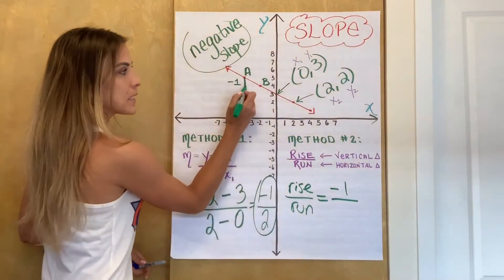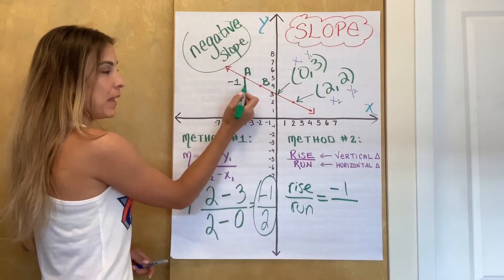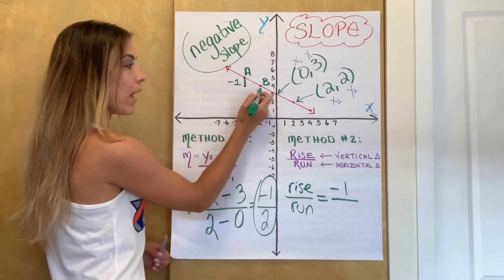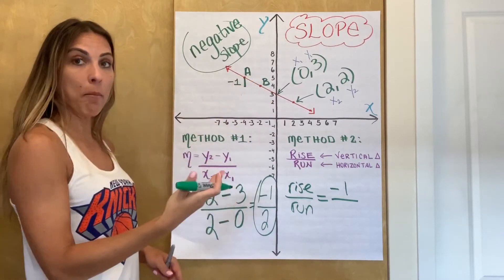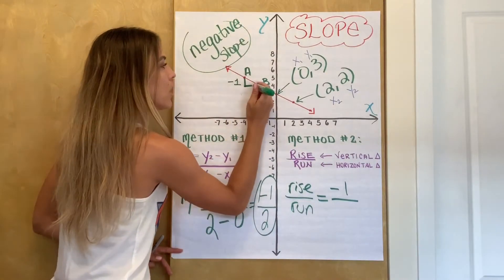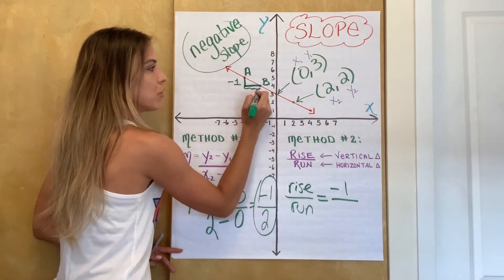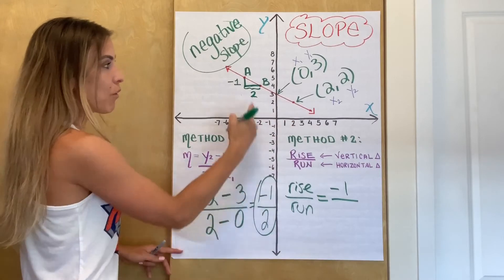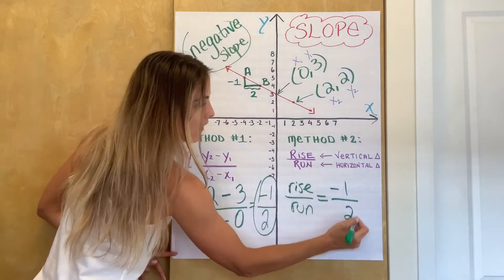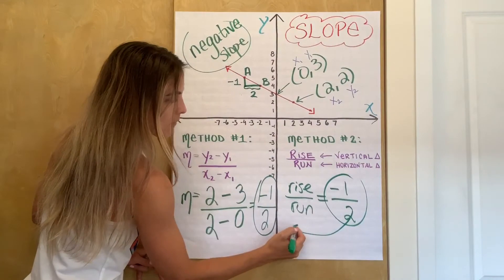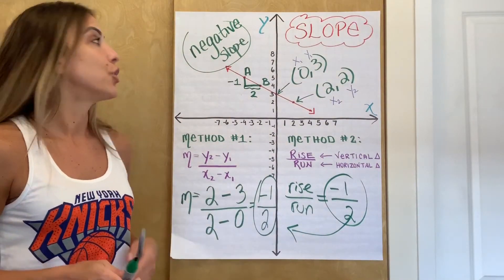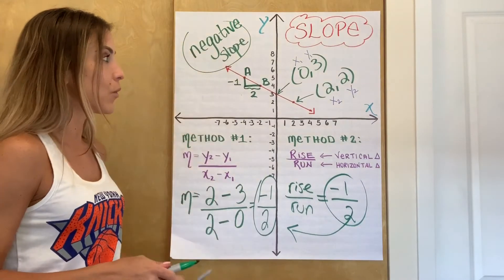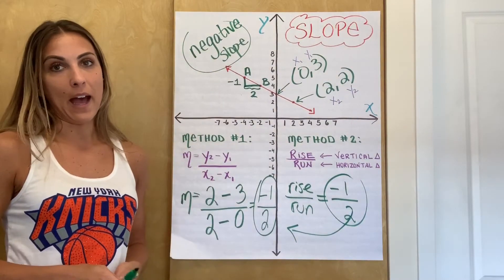Now my run. So now from this point, I'm still not at B. So do I have to go left or do I have to go right? Clearly I have to move to the right in order for me to reach B. Now how much to the right? I'm going to walk one, two blocks. So two units will get me over to B. So that's my run, my horizontal change. And look what I have here. The same exact value that I got using method number one. So either way you do it, your slope of this red line that I drew is going to be negative one half. Okay.